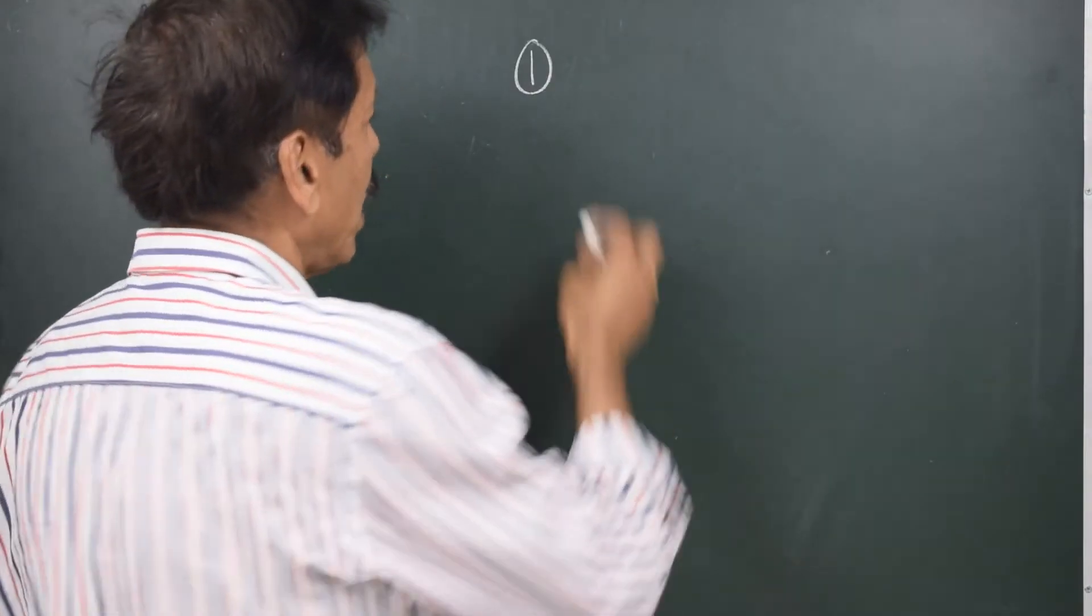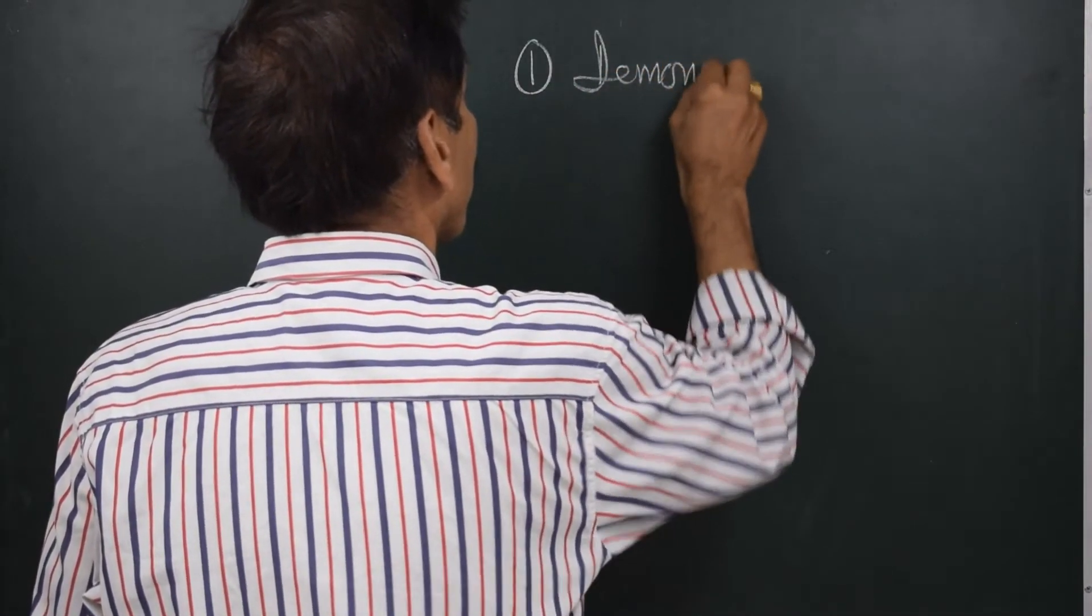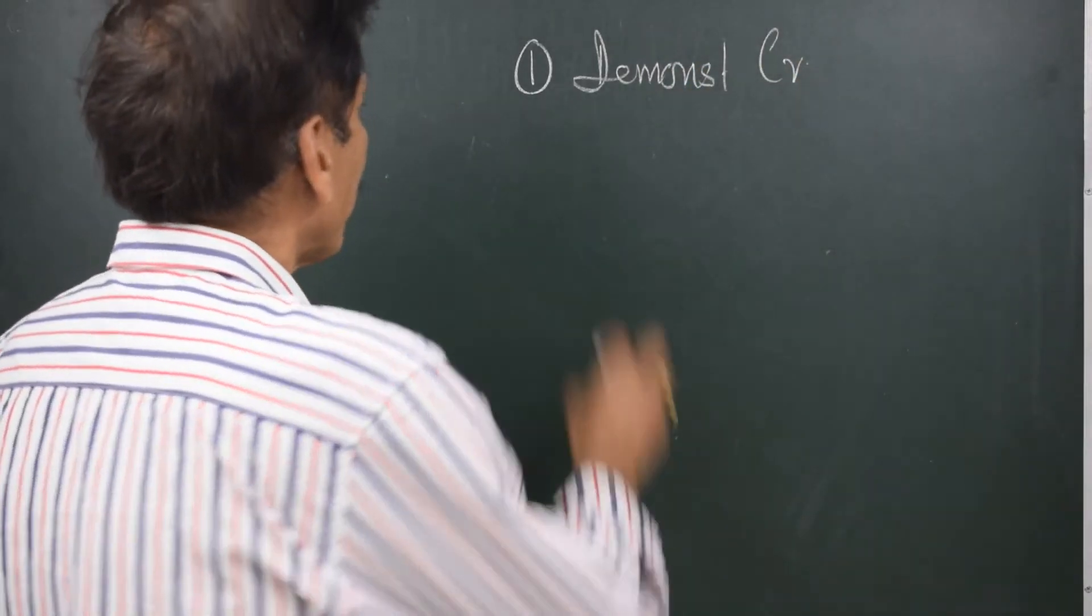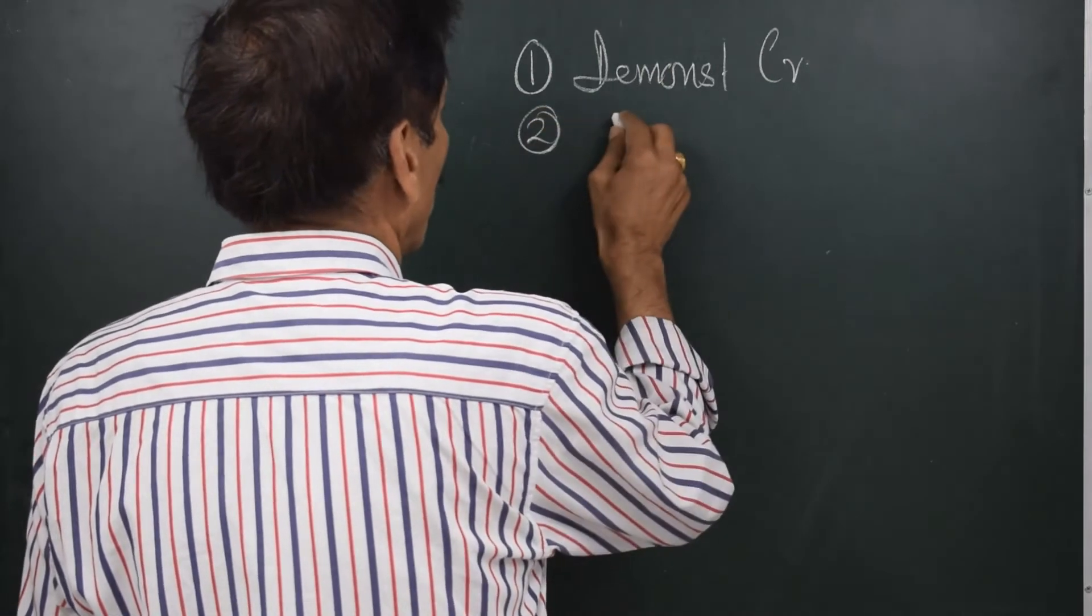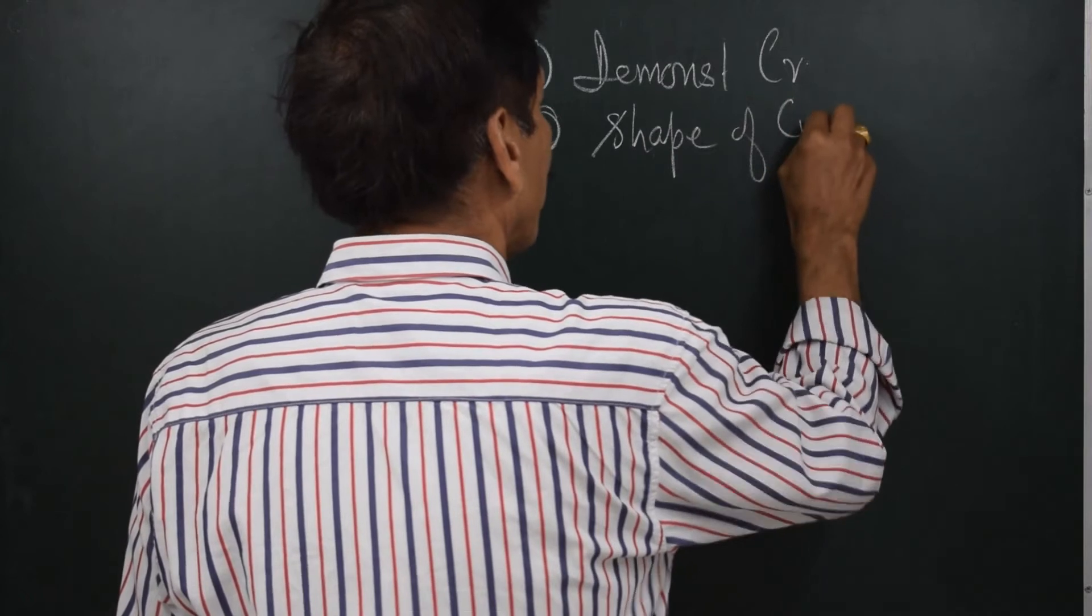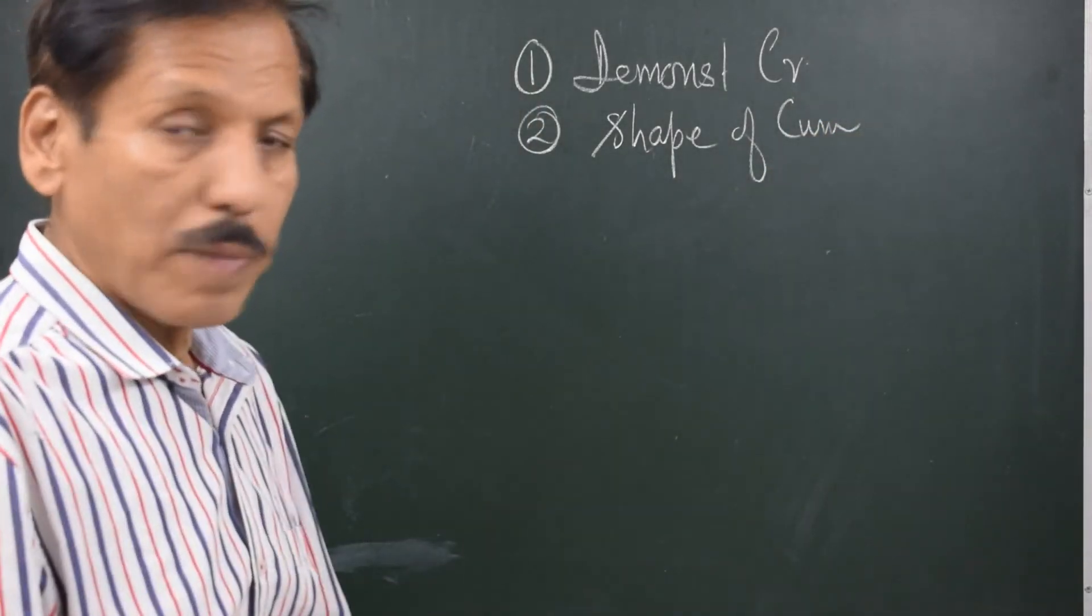There are various applications of knowledge of stability at large angles of heel. I can list them. One is demonstration of various criteria. Number two, the shape of curve gives an idea about the health and status of the stability.